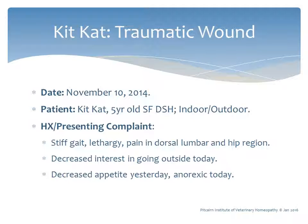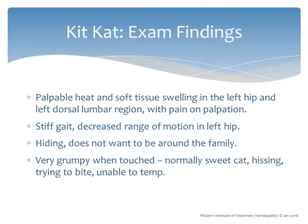Kit Kat is another case from my house call practice in Michigan. On November 10, 2014, Kit Kat, a five-year-old spayed female domestic shorthair, had a presenting complaint of stiff gait, lethargy, and pain in the dorsal lumbar and hip region, with decreased interest in going outside and two days of decreased appetite progressing to anorexia. Physical exam revealed palpable heat and soft tissue swelling in the left hip and dorsal lumbar region with extreme pain even on gentle palpation, stiff gait, and decreased range of motion. She was hiding and not wanting to be around her family.